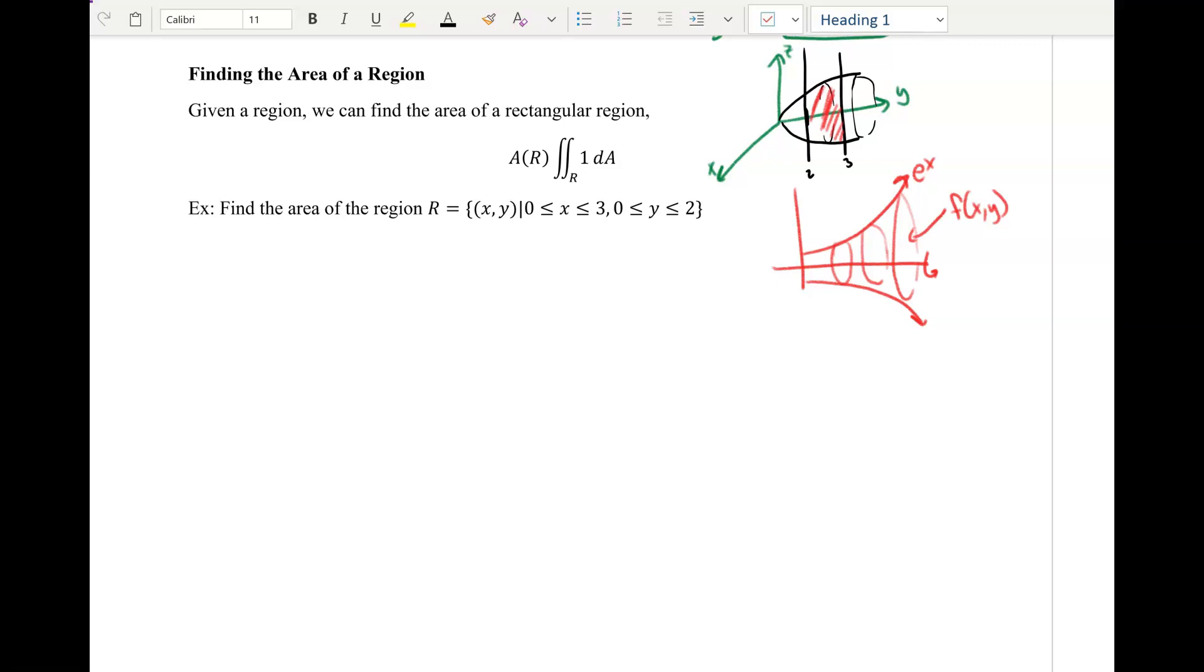All right, so this is where we left off in class. We were using double integrals to find volumes. And now here we're going to use the double integral to find the area. So there should actually be an equal sign right here. So if I'm given a region, we can find the area of the rectangular region using the double integral of 1 dA. So that will help us find the area of a particular region.